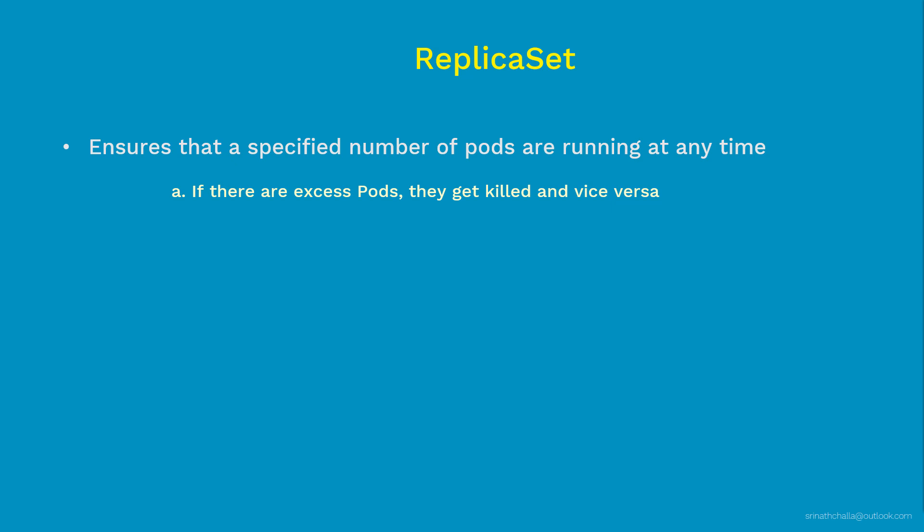Sometimes pods do fail, get deleted, or die for various reasons. When they do, if backed by a ReplicaSet, those pods get automatically recreated on the same node or another healthy node. There will be situations where you just want to run only one pod all the time — in that case, define the ReplicaCount as 1 in the manifest file. Even if that pod crashes or gets killed, the ReplicaSet will bring it back.